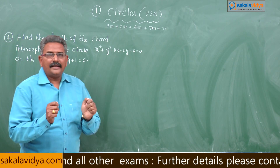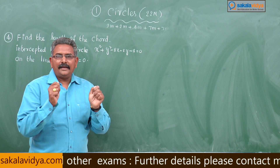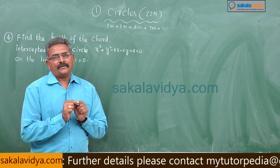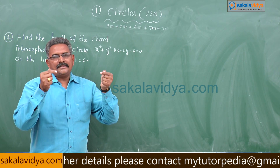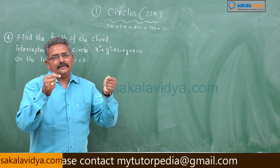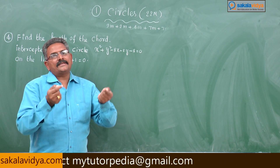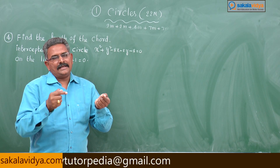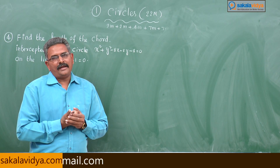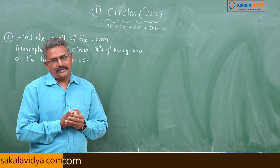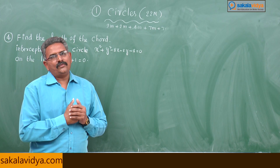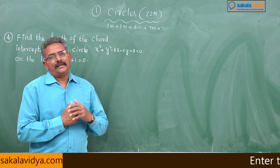That means, if any line intersects the circle at two points, the distance between the two endpoints of that line which intersects the circle is known as the length of the chord. That length of the chord we have to find out in this problem. Let us have a discussion on how to find out the length of the chord.